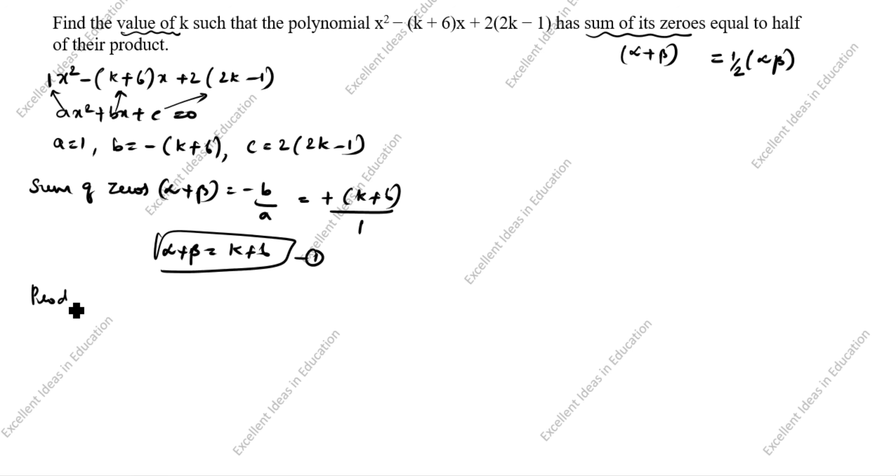Product of zeros. αβ = c/a. What is the c value? c is 2(2k - 1), and a is 1. So αβ = 2(2k - 1). This is the second equation.